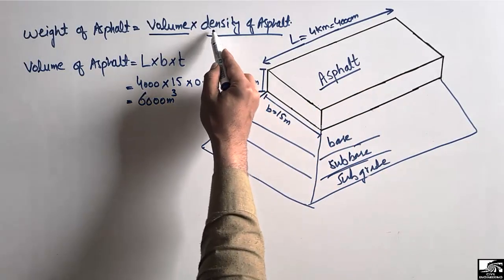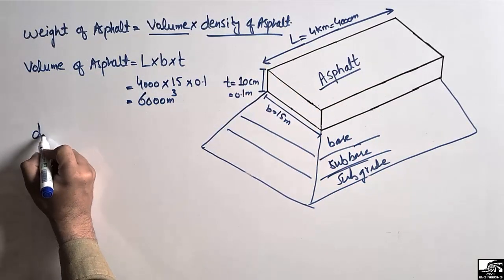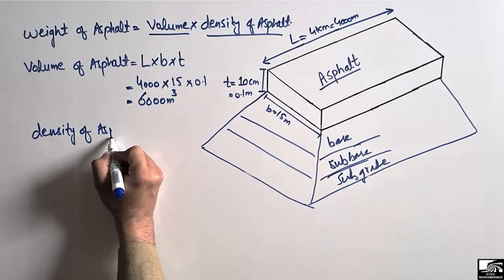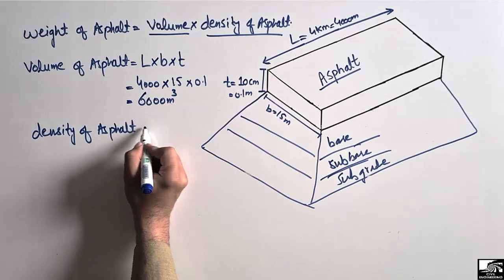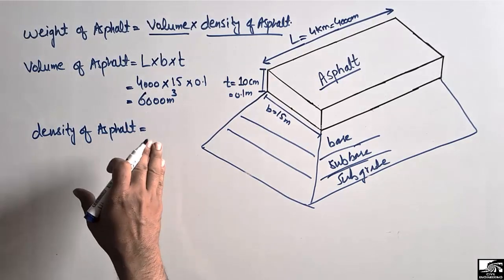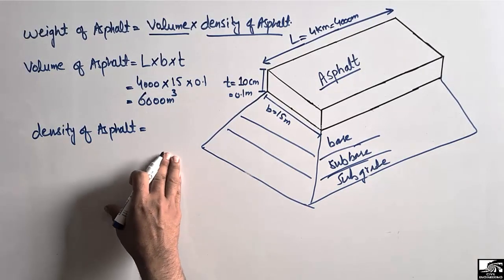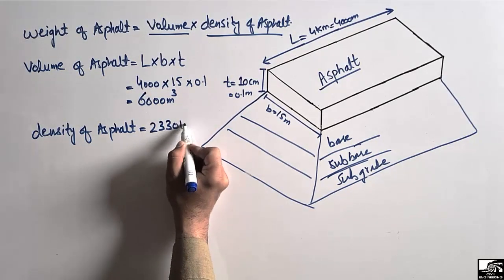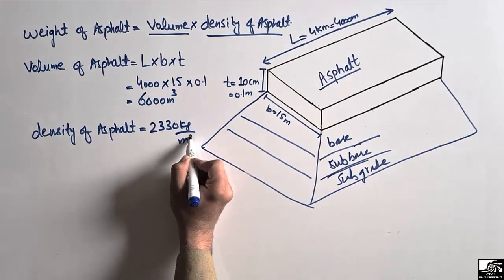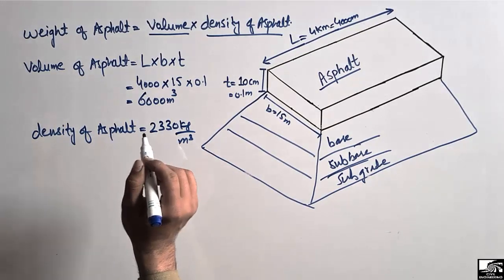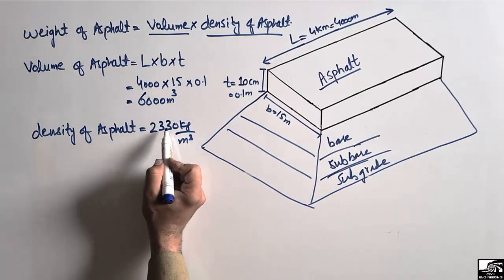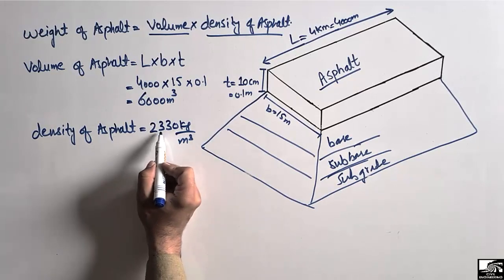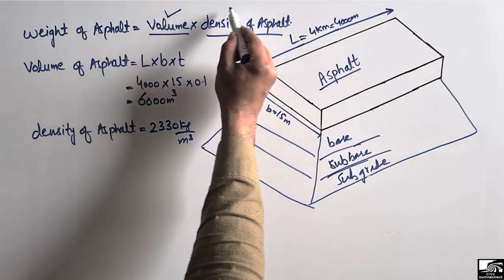Now we need to find the density of asphalt, which can be determined from the standard data sheet. The density of asphalt is 2330 kilograms per cubic meter. This is the standard value of the density of asphalt.